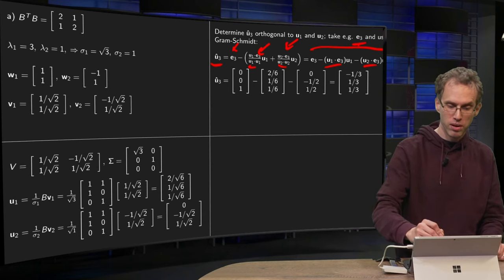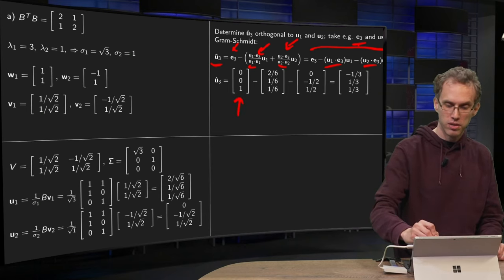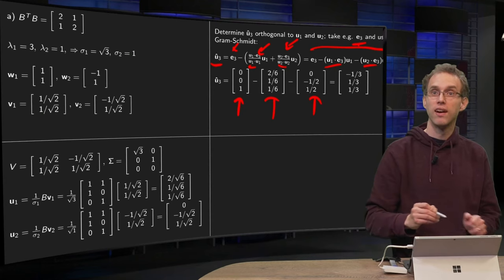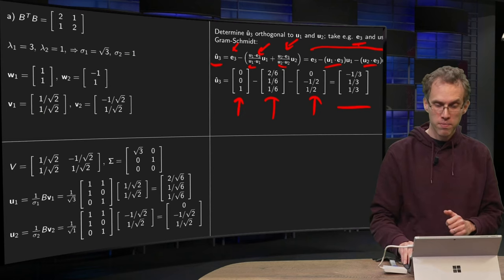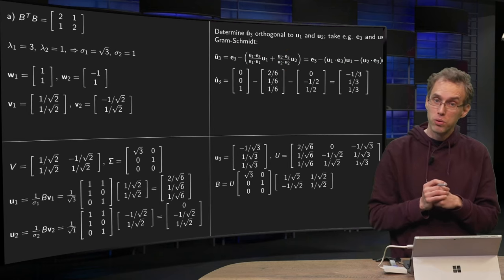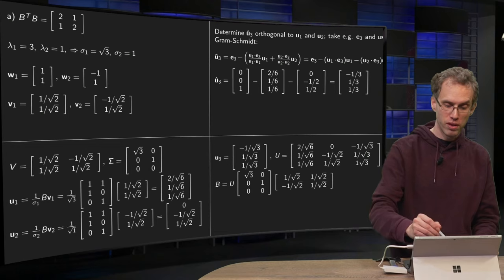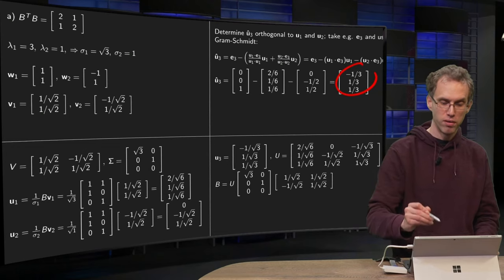And you end up with your E3 minus the first vector minus the second vector, and this gives you (-1/3, 1/3, 1/3). And of course you have to normalize that, so your U3 then if you normalize this vector over here.